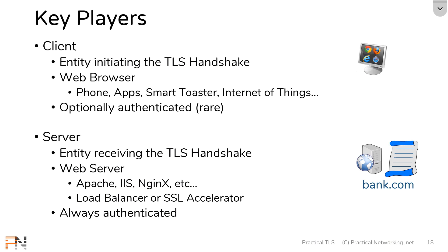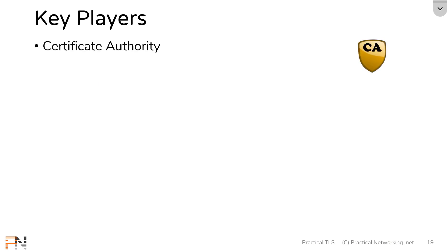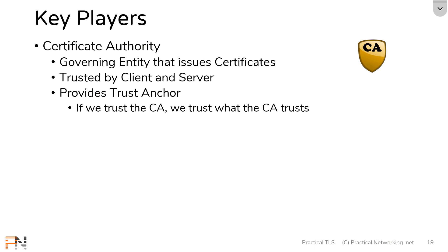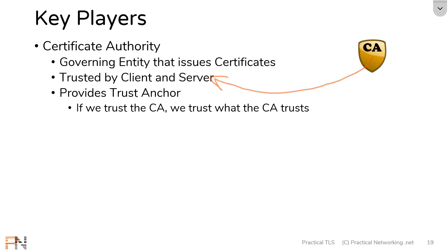You can remember it as who provides the certificate — the server is always going to provide a certificate. That certificate is important, but how do we get those certificates? That's the job of the certificate authority. The certificate authority is the governing entity that issues certificates to servers. It is trusted by both the client and the server and provides what's known as the trust anchor. The idea is the client might not trust all servers innately, but if the client trusts the CA and the CA provided a certificate for the server, therefore the client can trust the server.